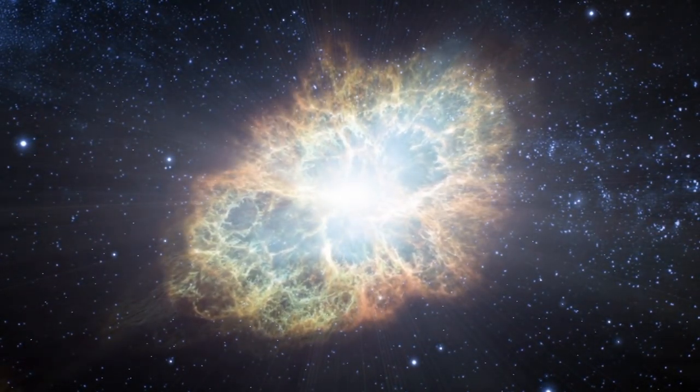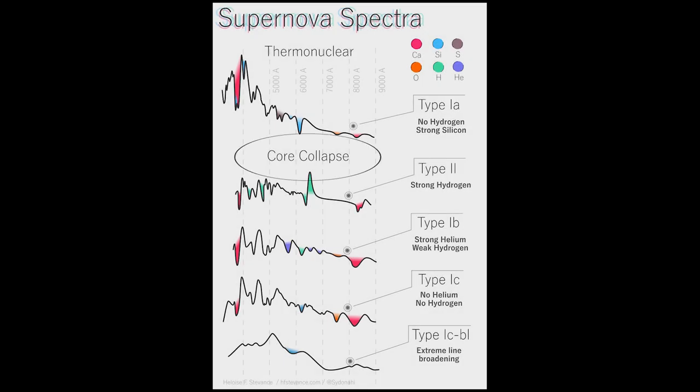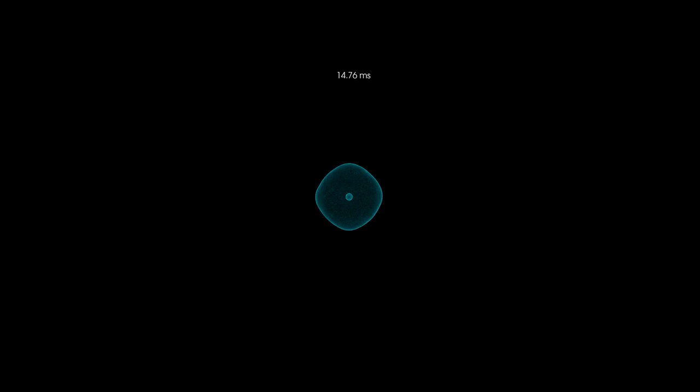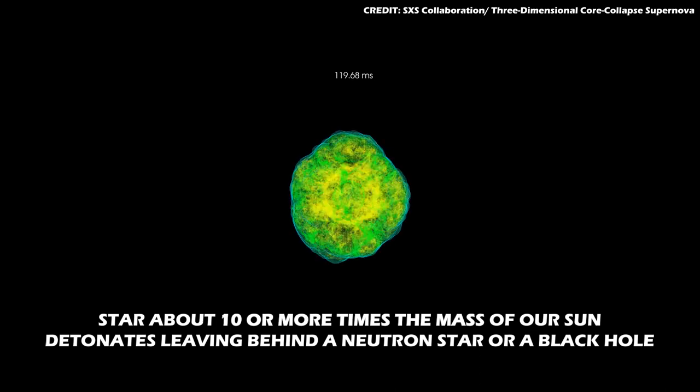Until recently, supernovae were categorized into two main types. One is a Type 2 or a core collapse supernova. This type of supernova happens when a star about 10 or more times the mass of a sun detonates at the end of its life, leaving behind a neutron star or a black hole.